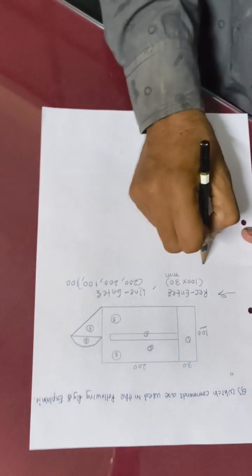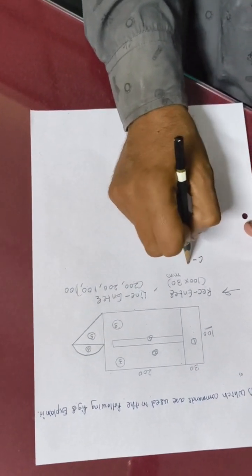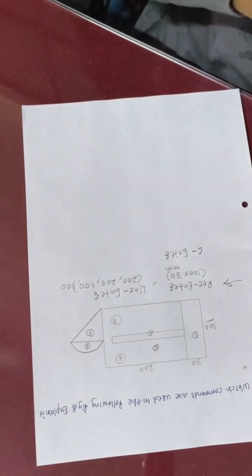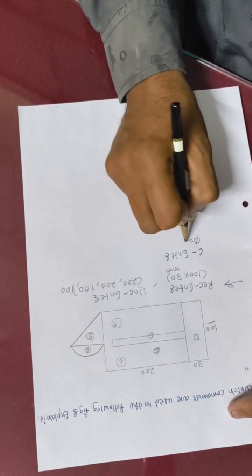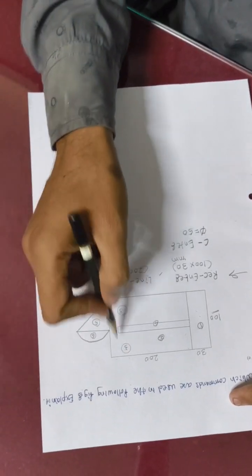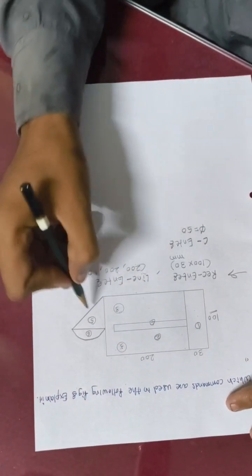Next is circle. For circle, C enter. This is the command. You can choose either radius or diameter. Diameter is equal to 50mm. We can create these two circles.